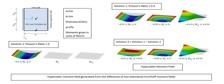The surface of Lamé's stress ellipsoid represents the locus of the endpoints of all stress vectors acting on all planes passing through a given point in the continuum body. In other words, the endpoints of all stress vectors at a given point lie on the stress ellipsoid surface—the radius vector from the center of the ellipsoid to a point on its surface is equal to the stress vector on some plane passing through the point. In two dimensions, the surface is represented by an ellipse.